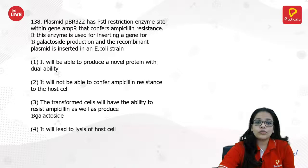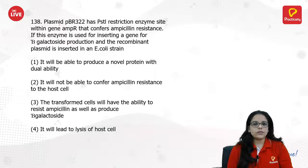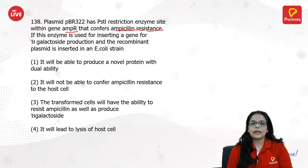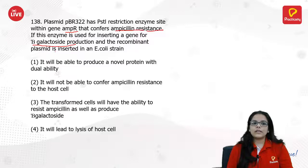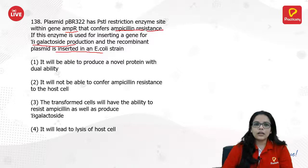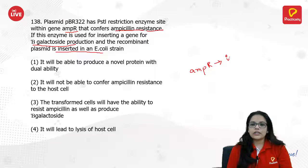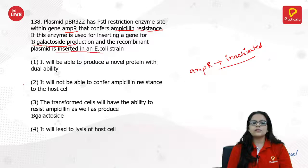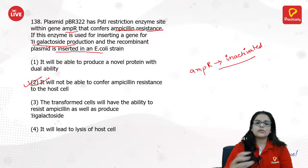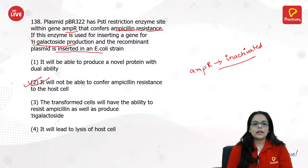Plasmid pBR322 has a PstI restriction enzyme site within the ampicillin resistance (AmpR) gene that confers ampicillin resistance. If this enzyme is used for inserting a gene for beta-galactosidase production, the recombinant plasmid is inserted in an E. coli strain. When beta-galactosidase is inserted, the AmpR gene becomes inactivated and will not confer ampicillin resistance to the host cells.